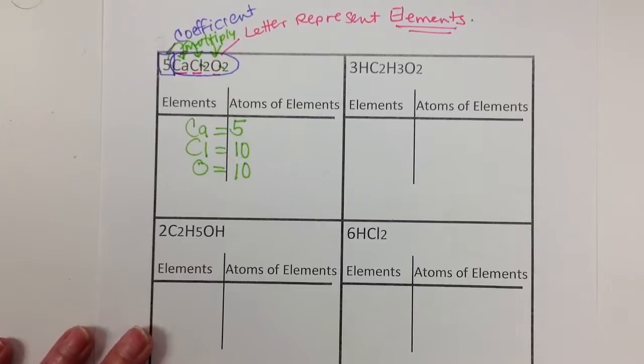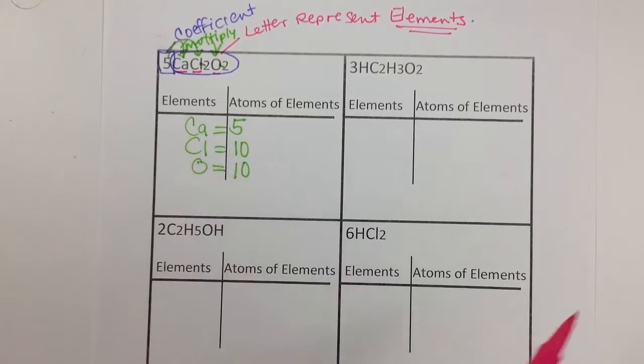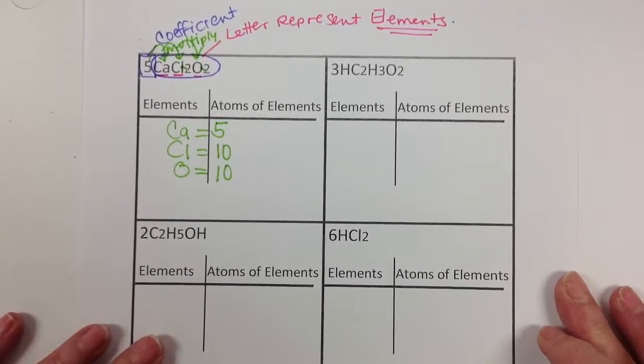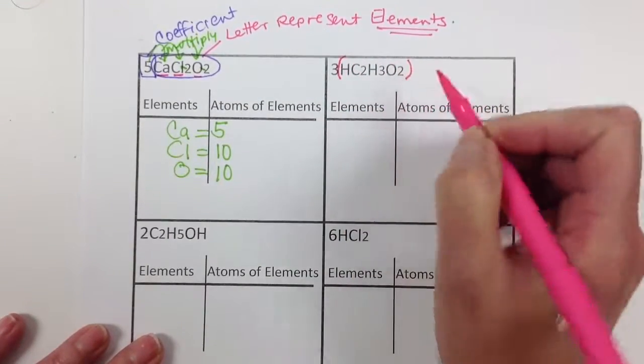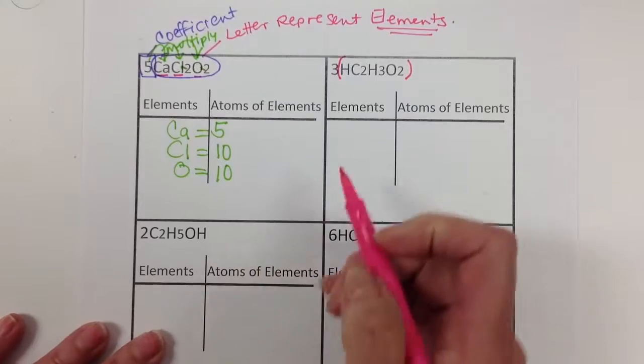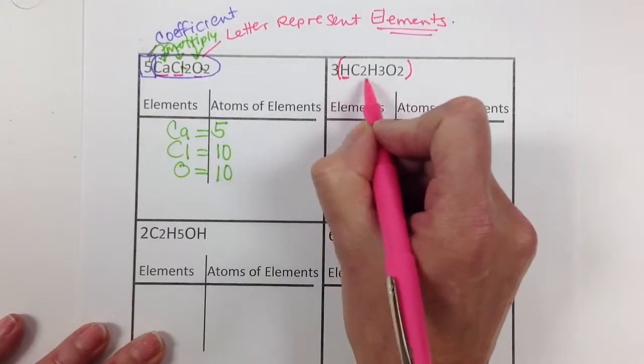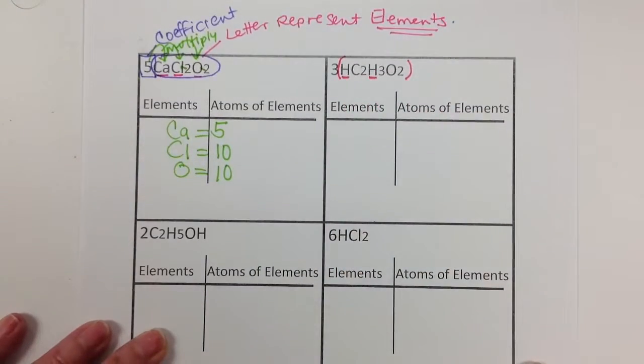Let's try the next one, it's a little trickier. So we have a coefficient of three, in other words we have three HC2H3O2. Now notice in this formula we have H listed twice in the formula, but that is actually due to the way the molecules are arranged.